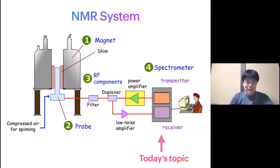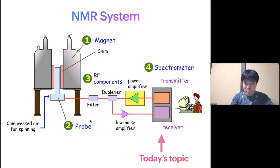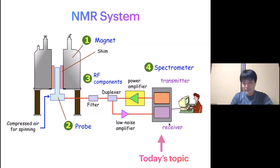Very roughly speaking, an NMR system is composed of: firstly a magnet, then a probe, RF components, and the spectrometer. There are already very nice lectures about probes in this global NMR series, so I would like to focus on something else — namely the spectrometer. And again, very roughly speaking, the spectrometer is composed of a transmitter and a receiver. Those are what I'm going to focus on today.